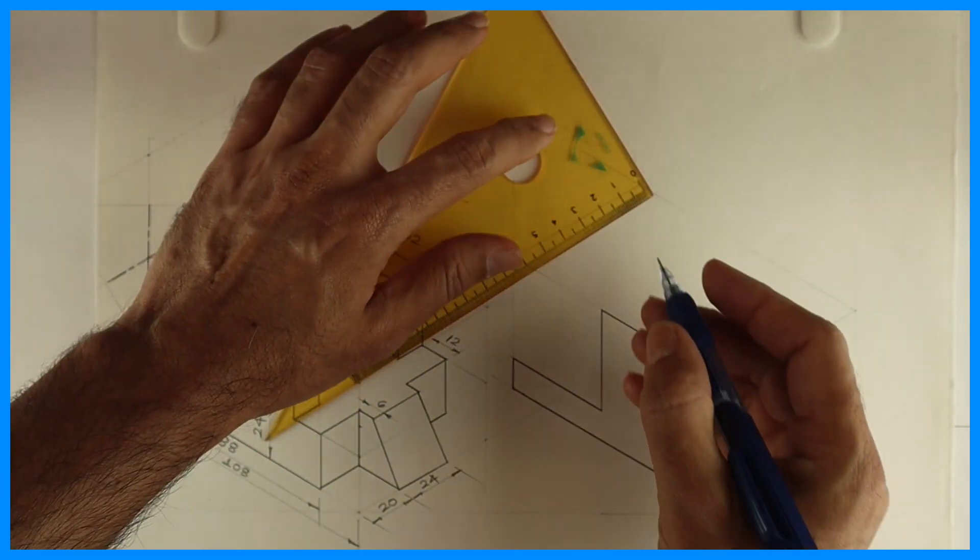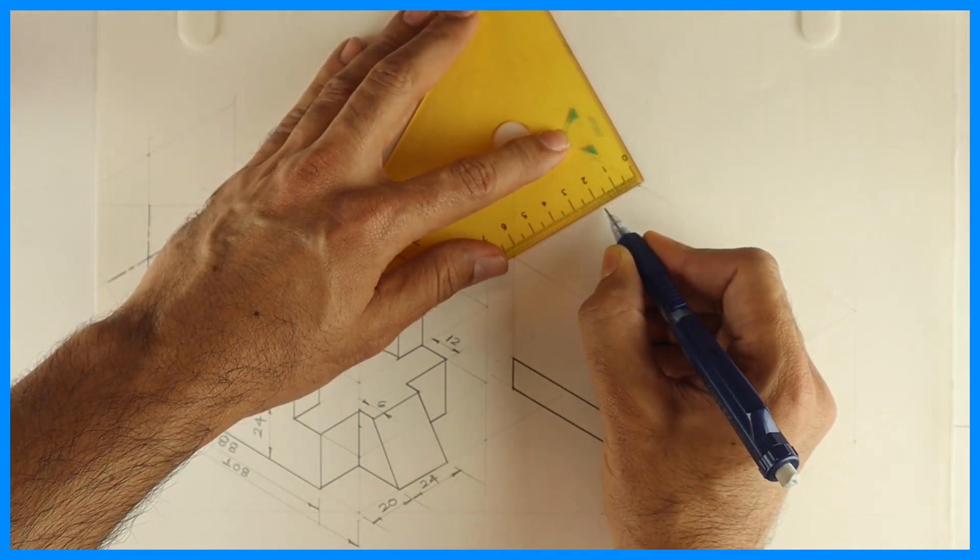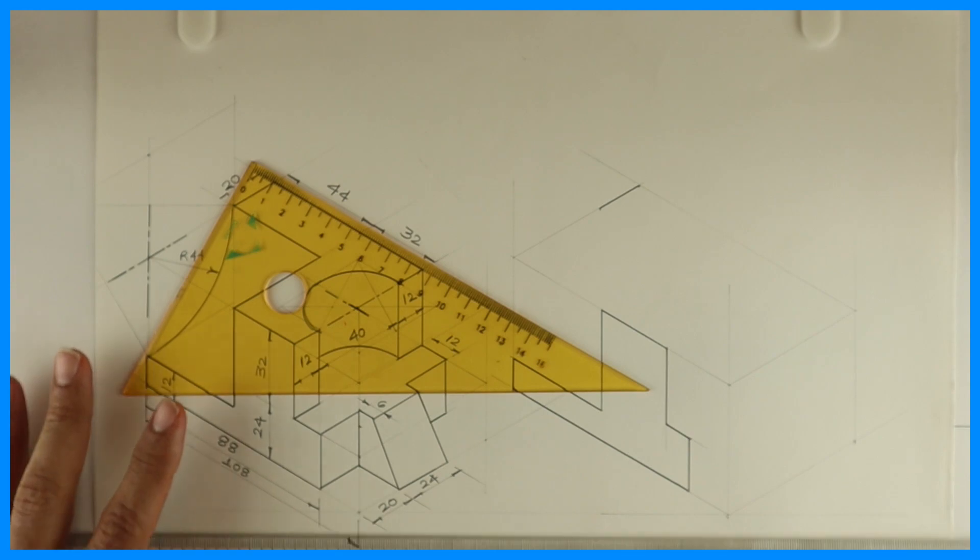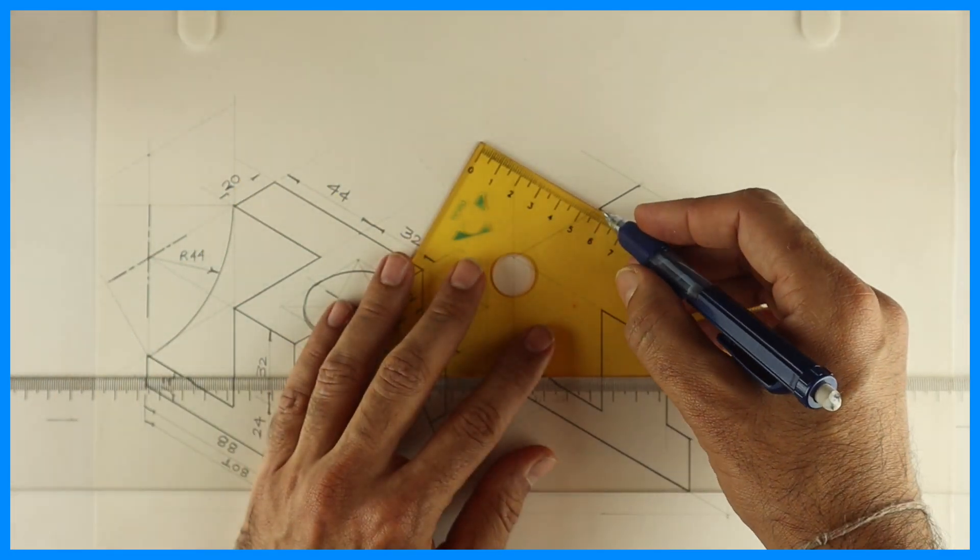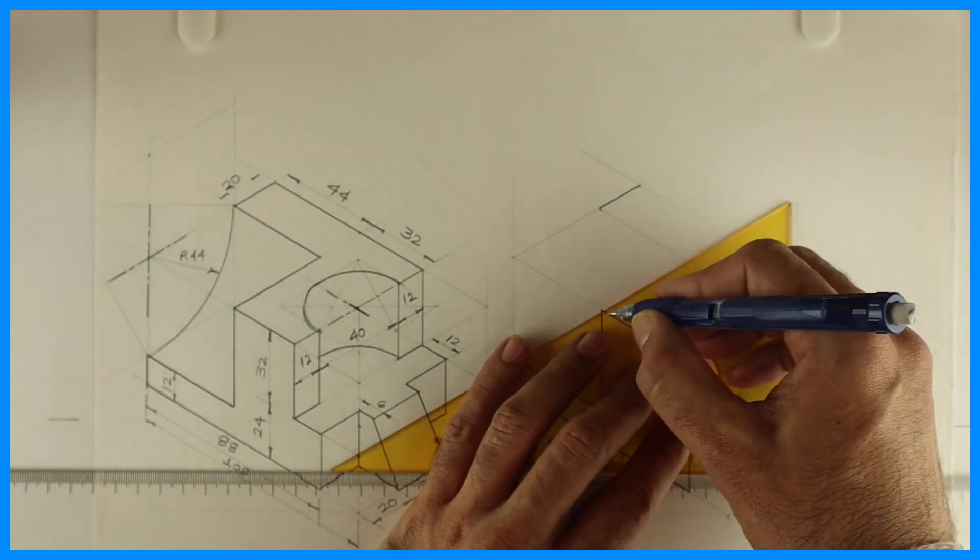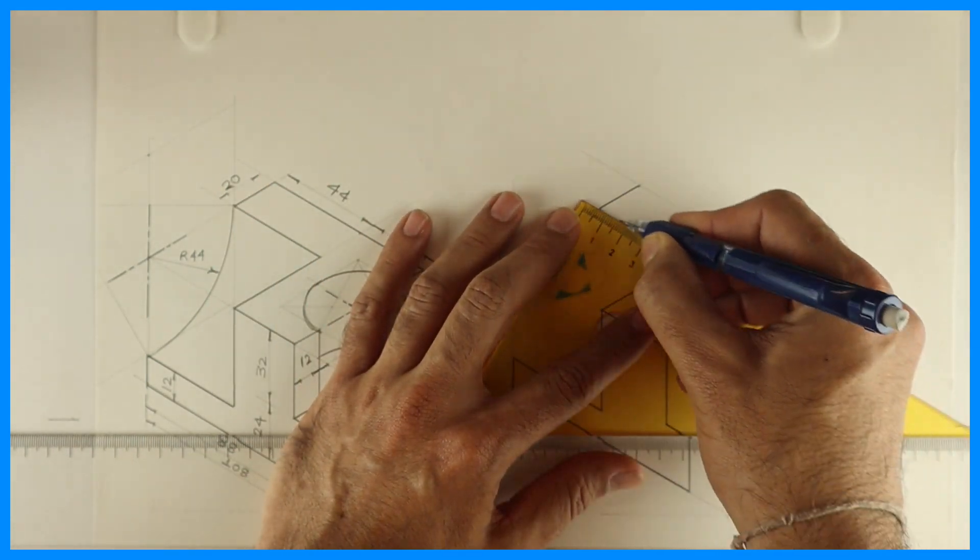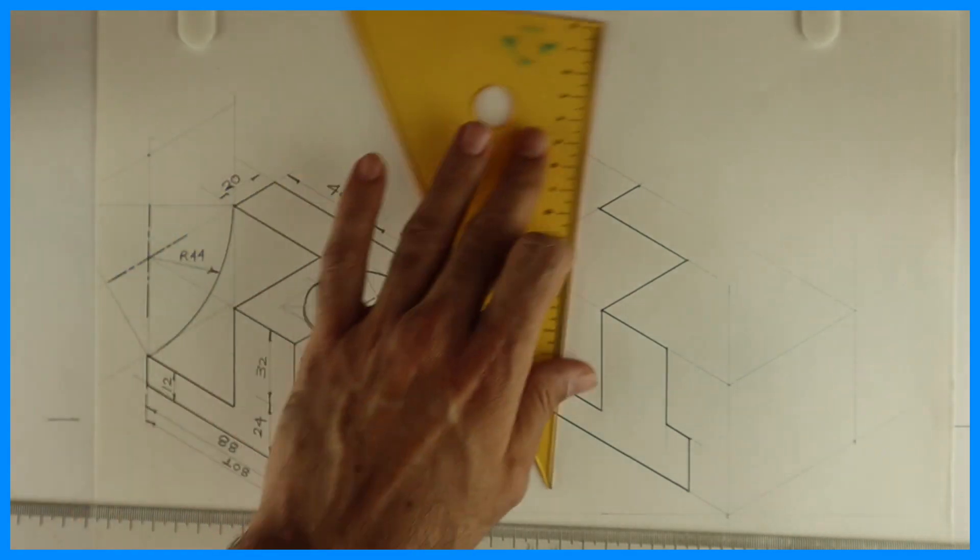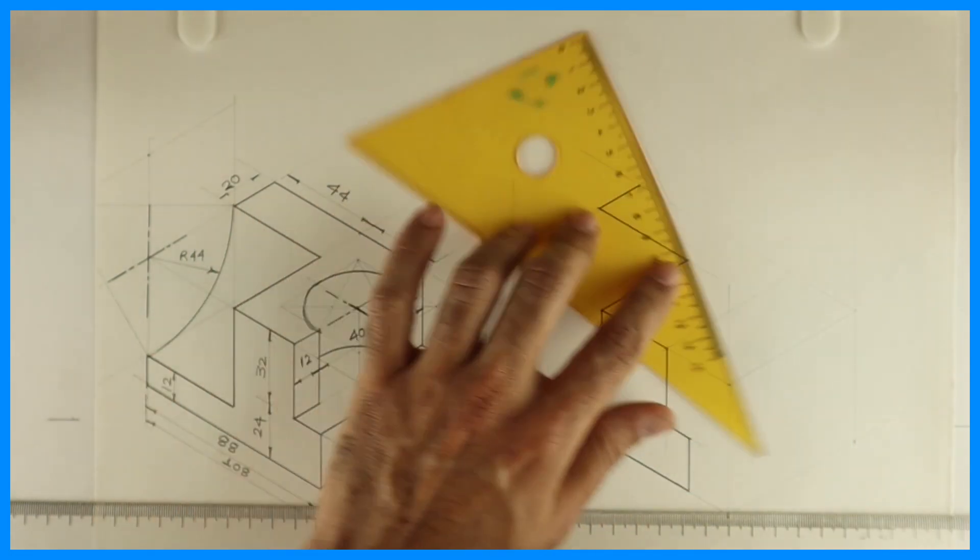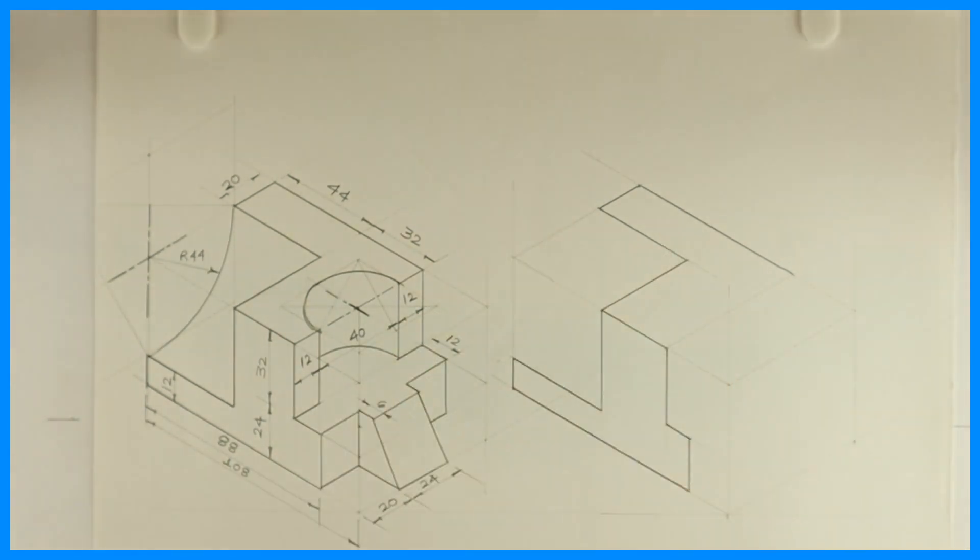Now if you see this part which is behind, this is 20 and this is 44. See this, so we'll get that L shape in top view. Then again we'll draw line from here and line from here.